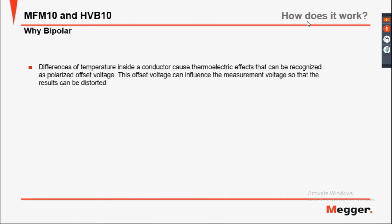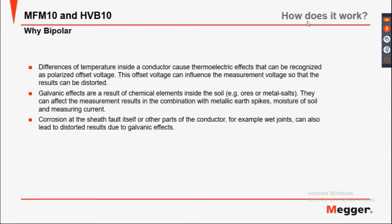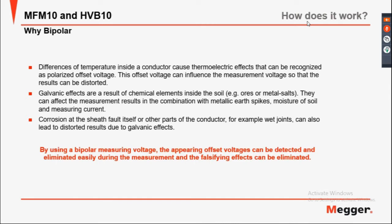Why do we apply bipolar measurement? Temperature differences inside a conductor cause thermoelectric effects that can be recognised as a polarised offset voltage. This offset voltage can influence the voltage measurement and distort the result. Galvanic effects result from chemical elements inside the soil — horses, metal salts — which can affect measurement results through metallic corrosion, moisture in soil, and measurement error. Erosion at the sheath fault itself or wet joints can also lead to distorted results. By using bipolar measurement, these offset voltages can be detected and eliminated during measurement.